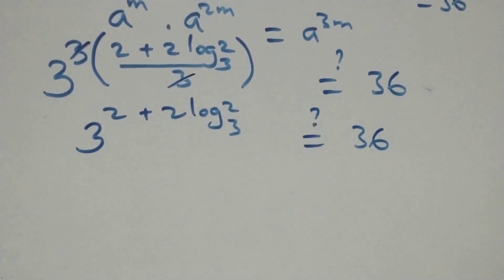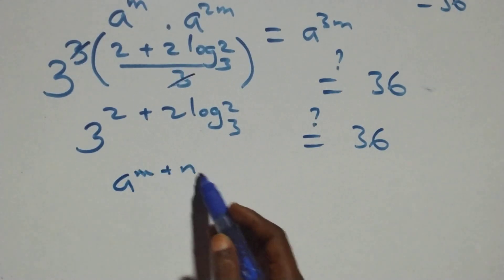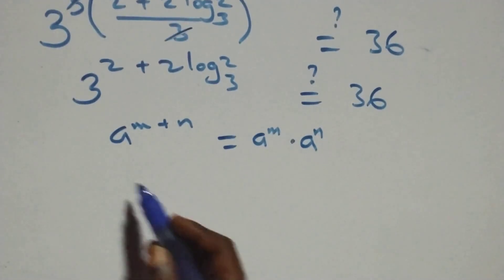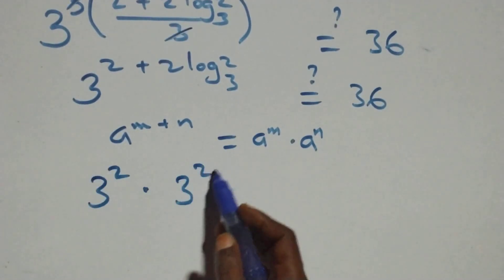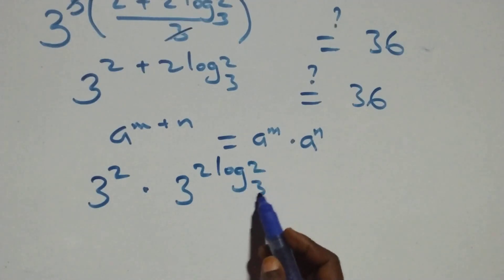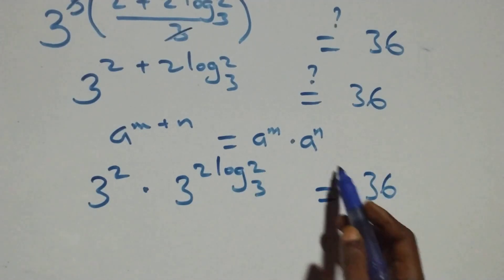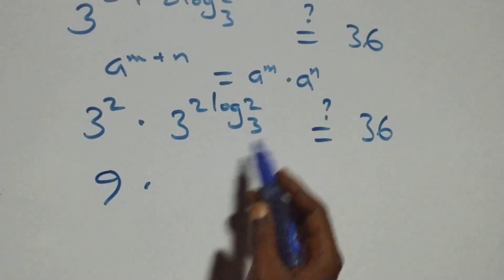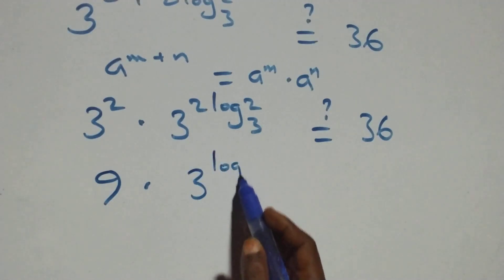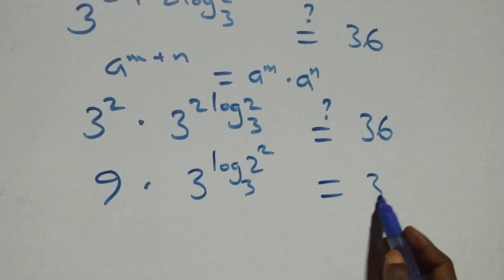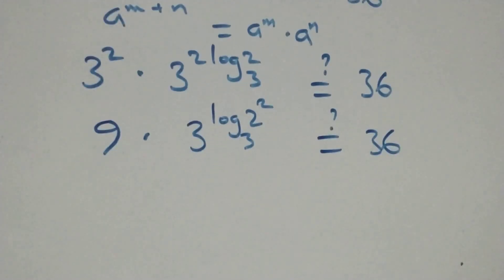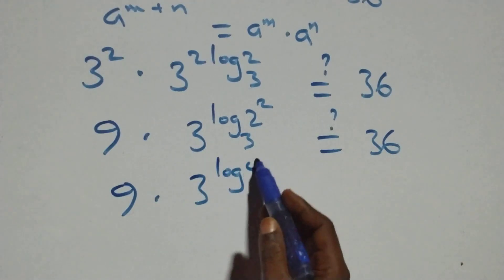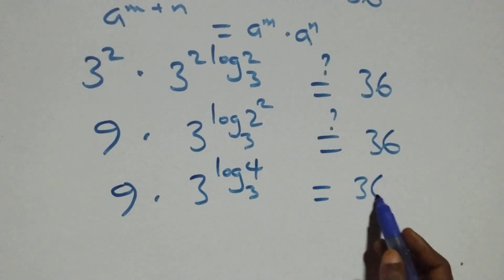Applying the rule a raised to power m plus n equals a raised to power m times a raised to power n, we expand: 3 raised to power 2 — which is 9 — times 3 raised to power log(2²) base 3, which is 3 raised to power log 4 base 3. This equals 36.